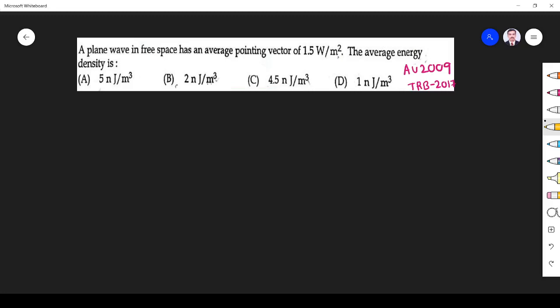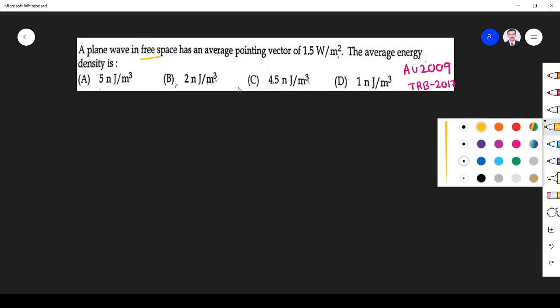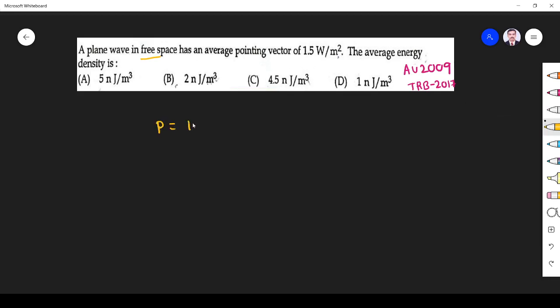Hi students, welcome to the problem solving session. In this class we solve the problems from Poynting theorem. The question is: a plane wave in free space has an average Poynting vector of 1.5 watt per meter square. Find the average energy density.